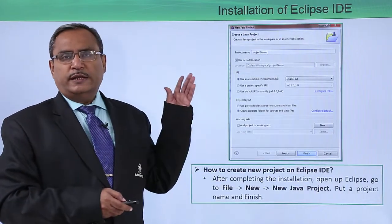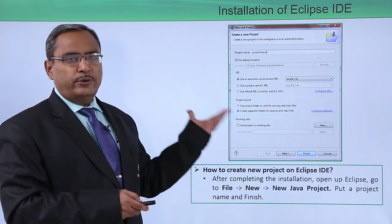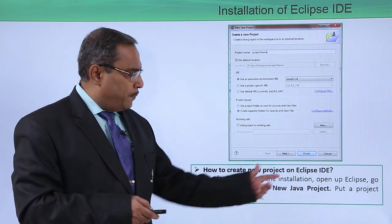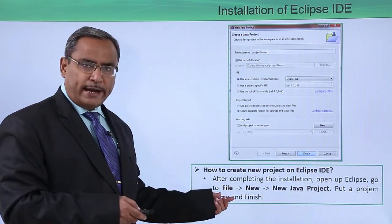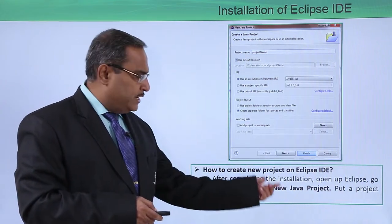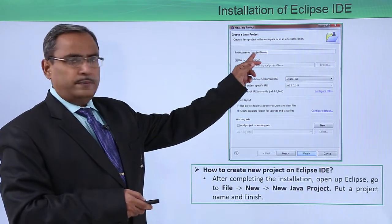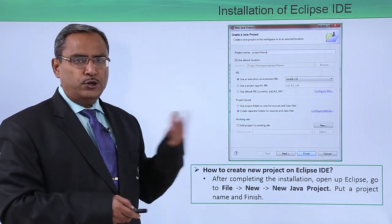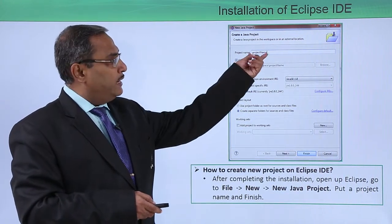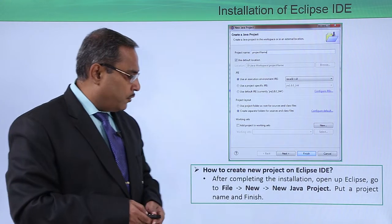After successful installation of Eclipse, open your Eclipse. After completing the installation, open Eclipse and go to File. Under File, you have the option New and then New Java Project. Put a project name — this window will come up when you go for a new project name — and then click Finish.